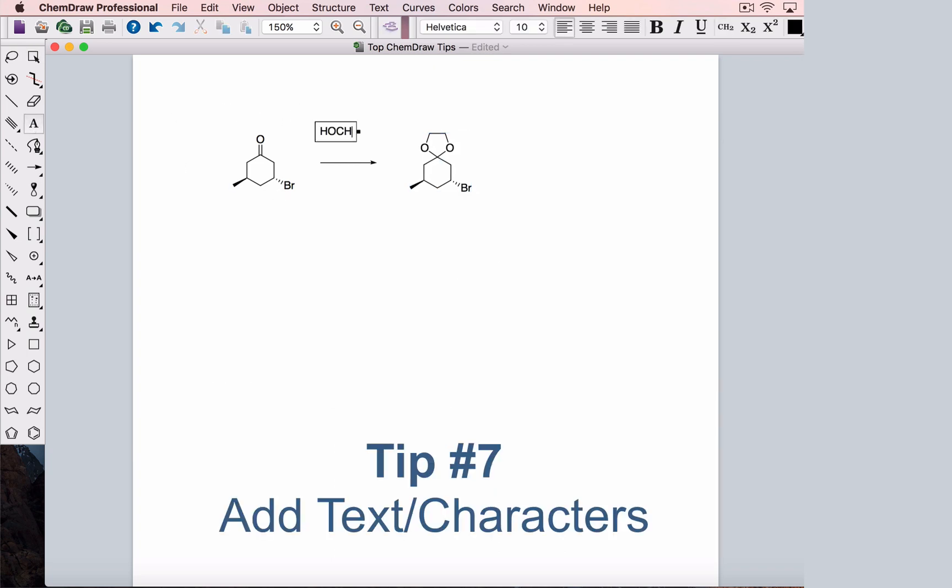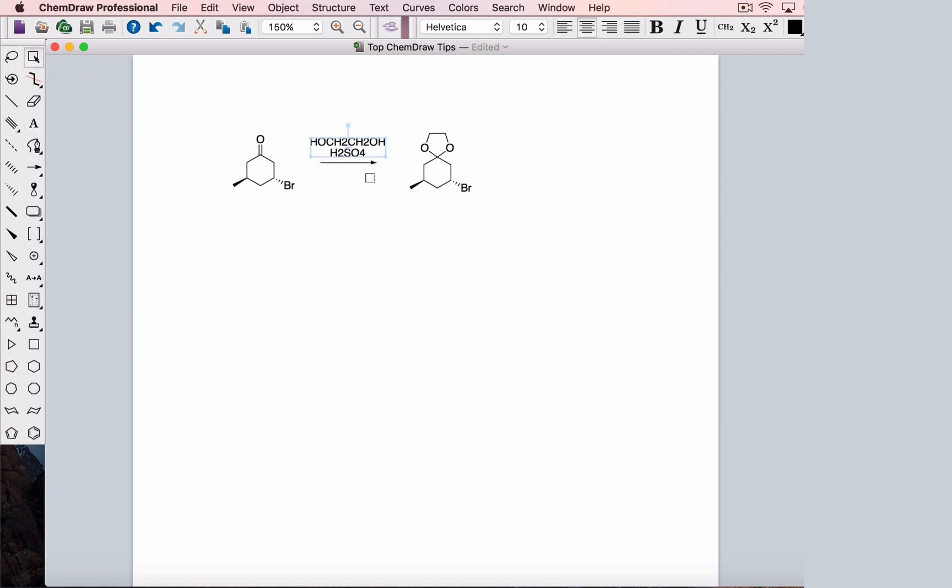There's some tricks for adding text as well. When we label something on a structure, ChemDraw automatically makes it into a formula. However, when we're typing text, ChemDraw doesn't know if we want it to be a formula or not. We need to tell the program this is a formula by selecting the text and clicking this little CH2 here, which makes the selected text into a formula.